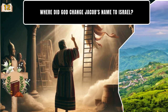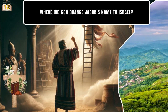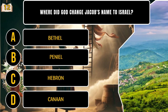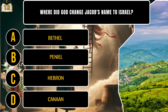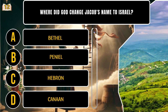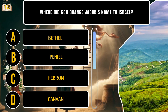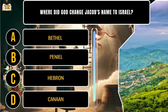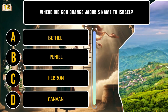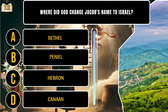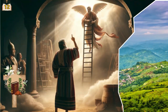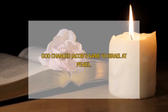Where did God change Jacob's name to Israel? A. Bethel. B. Peniel. C. Hebron. D. Canaan. That's B. God changed Jacob's name to Israel at Peniel.